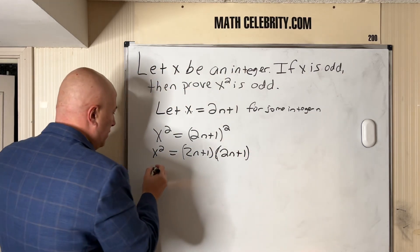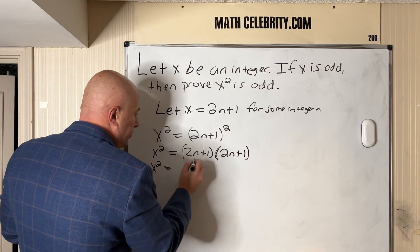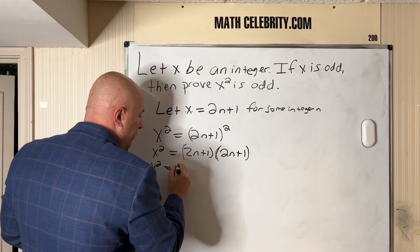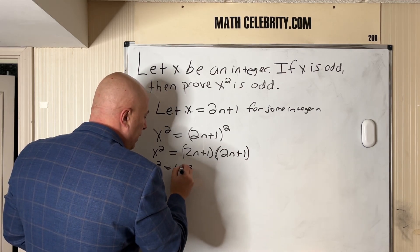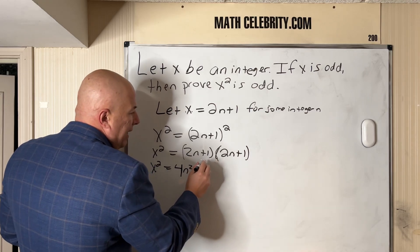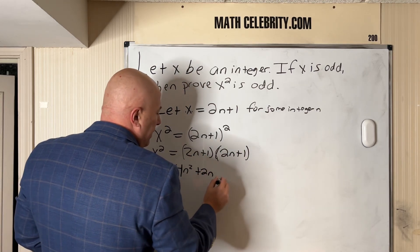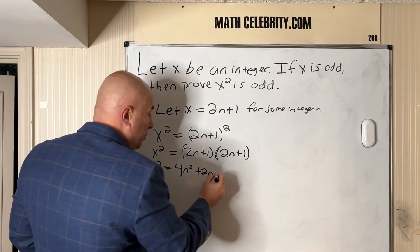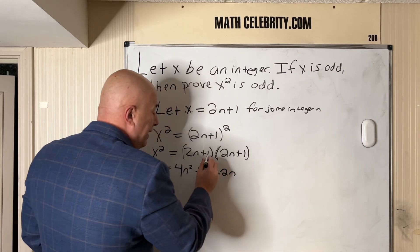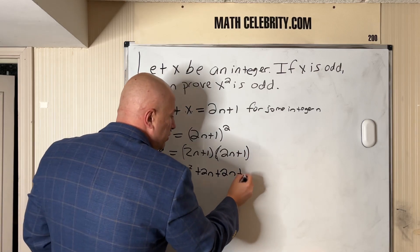So first, x² equals 2n times 2n, that's first, the first terms, 4n². And then outside is 2n times 1, plus 2n. Inside is 1 times 2n, that's 2n. And then last is 1 times 1, plus 1.